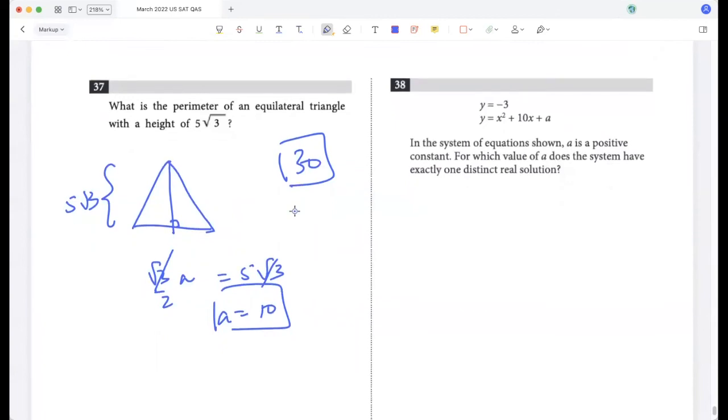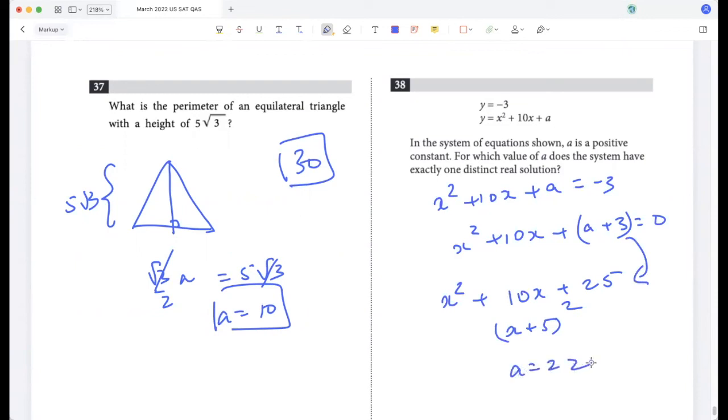In the system of equations shown, a is a positive constant. For which value of a does the system have one distinct real solution? x squared plus 10x plus a should be negative 3, so x squared plus 10x plus a plus 3 should be 0. For this to have one distinct real solution, this expression should be a perfect square. x squared plus 10x plus 25 is a perfect square, right? Because that's x plus 5 the whole square, so a plus 3 should be 25, so a is 22.